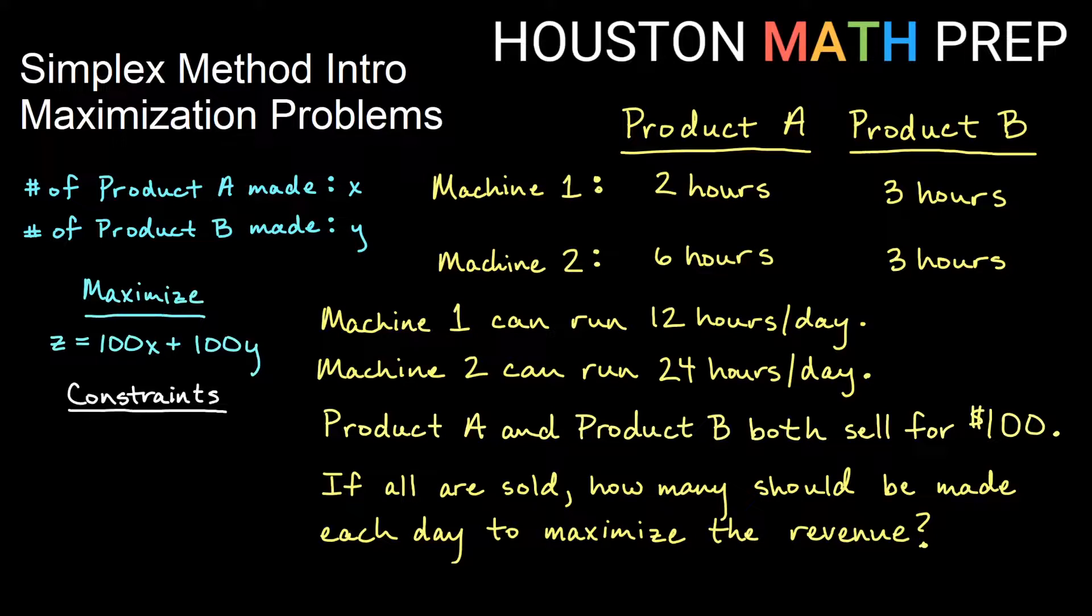We have what are called constraints, so those are limiting factors as we look through this. We notice that we are limited by machine one. It can run 12 hours a day, so I know I can use machine one, the amount that I can use it is less than or equal to 12 hours a day. And the way we use machine one is that we need two hours for every product A we make, in other words 2 for x, and we need three hours for every product B that we make, in other words 3 for y. So we get the full inequality of 2x plus 3y less than equal to 12.